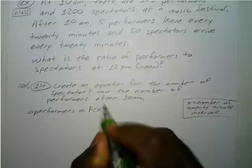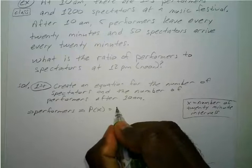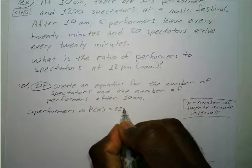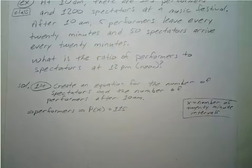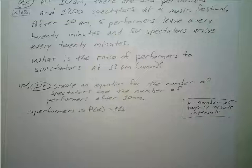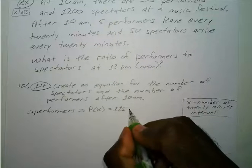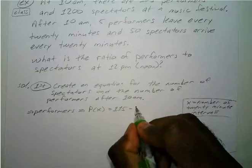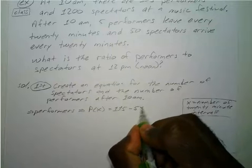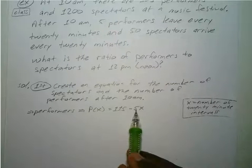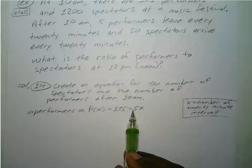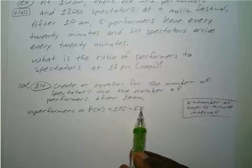We know that at exactly 10 a.m. there are 115 performers, and 5 performers leave every 20 minutes. So that's minus 5 times the 20-minute interval. After 20 minutes 5 leave, after 40 minutes 10 leave, and so on.